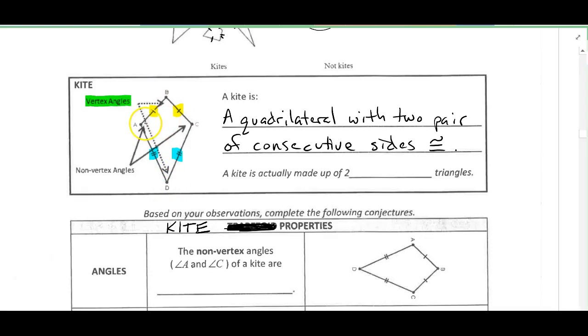But if you notice, if I draw in this diagonal here, I have an isosceles triangle on the top with these two yellow tick marks being the sides, and I have an isosceles triangle on the bottom with the blue tick mark sides being the congruent legs. So then in this picture, B and D would be the vertex angles, and then A and C sometimes we'll call them the non-vertex angles.